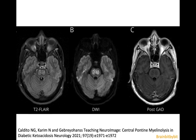Osmotic demyelination syndrome can also be caused by other electrolyte disturbances. This is the case of a patient with diabetes and ketoacidosis who has a similar picture of pontine myelinolysis.